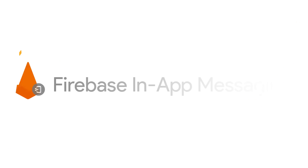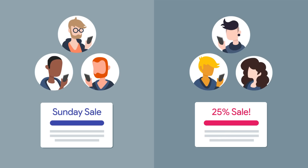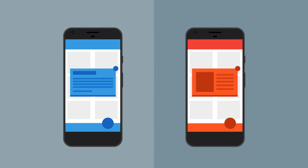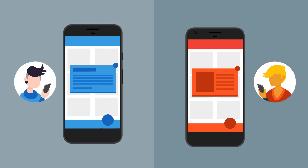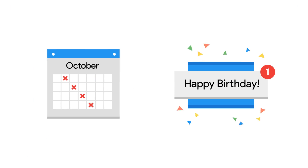Firebase in-app messaging makes it easy to set up and run in-app messaging campaigns. You have the power to target messages to specific audiences, trigger messages based on user behavior, and tailor the design of the message to suit user interests and your brand. Whether you want to set up recurring campaigns or send a one-time alert, Firebase in-app messaging supports a variety of use cases.